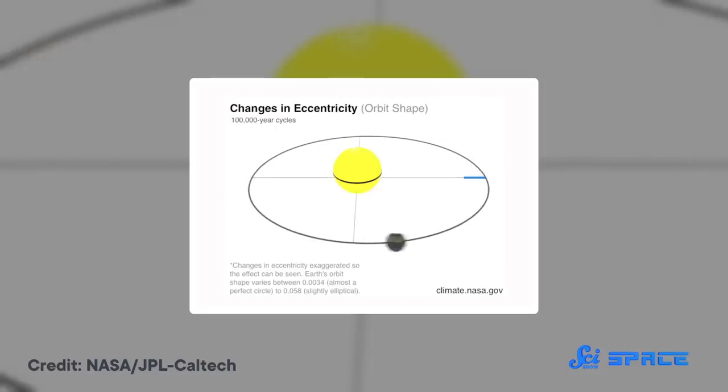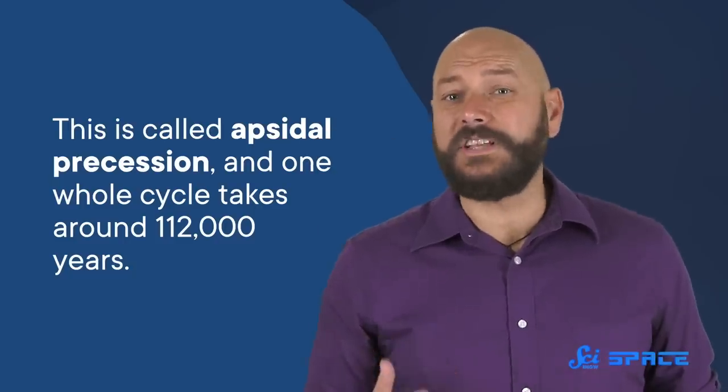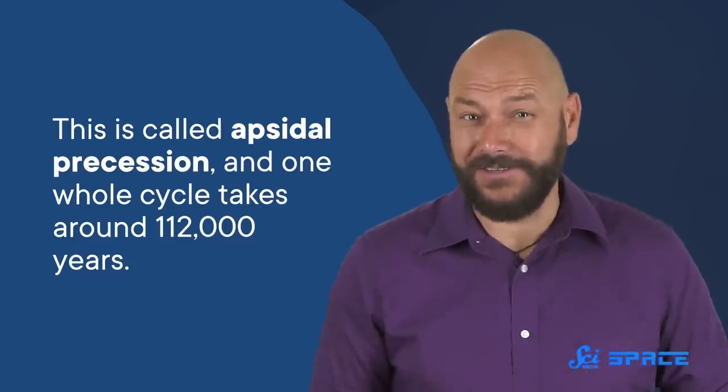Earth isn't only wobbling on its axis, though. The entire plane of its orbit wobbles, too, thanks to the pull of all the other planets. This is called Apsidal precession, and one whole cycle takes around 112,000 years.